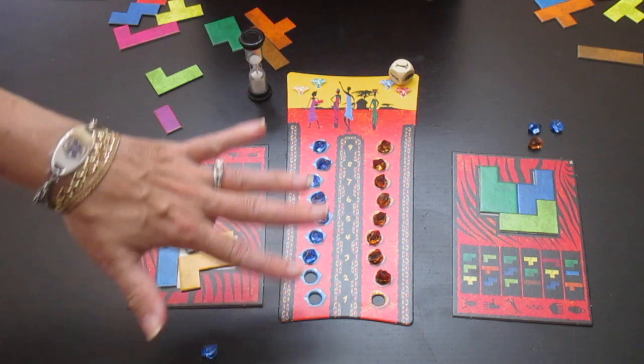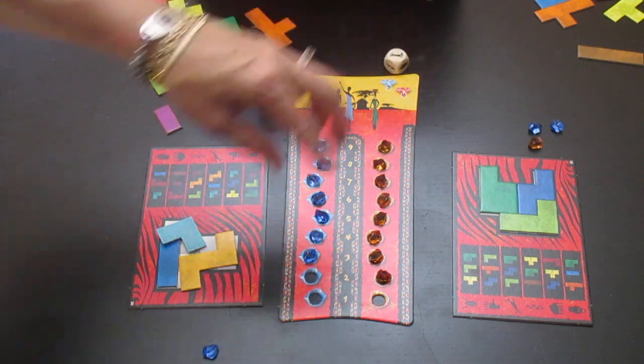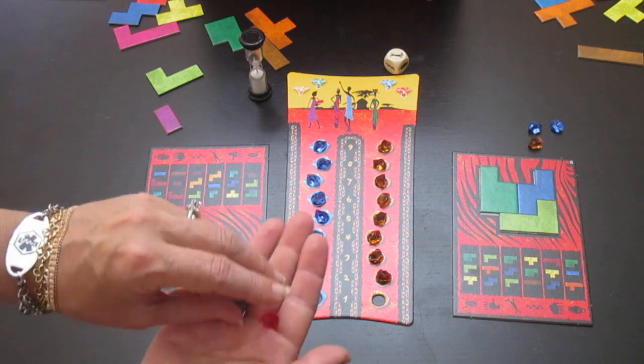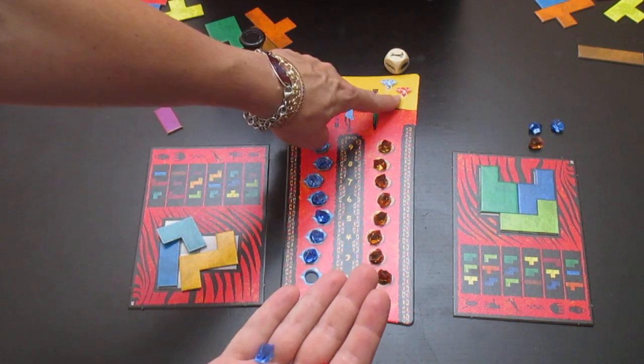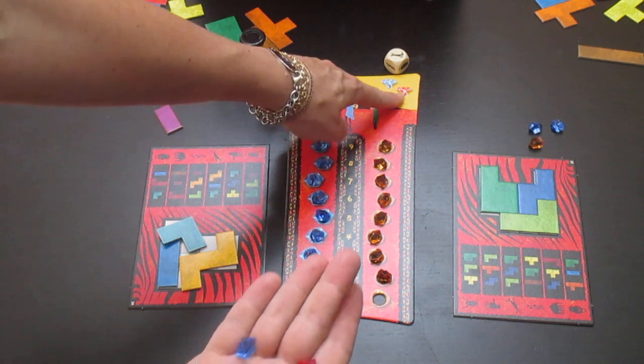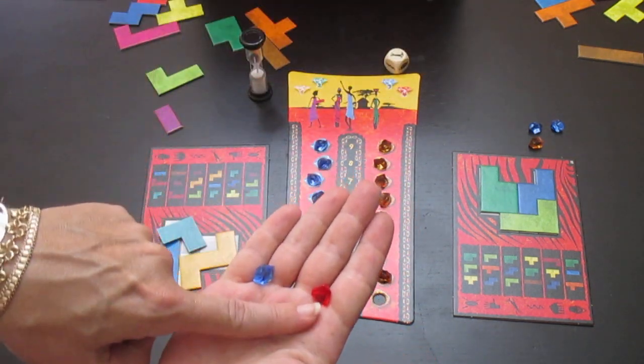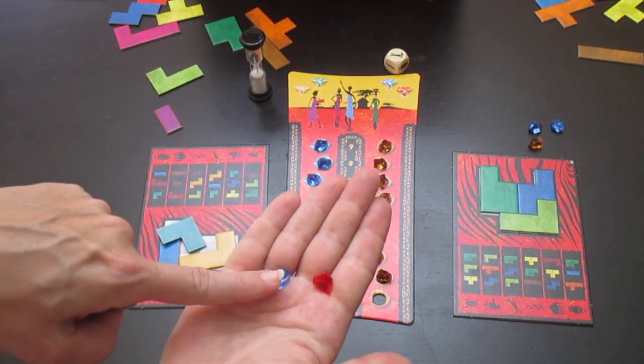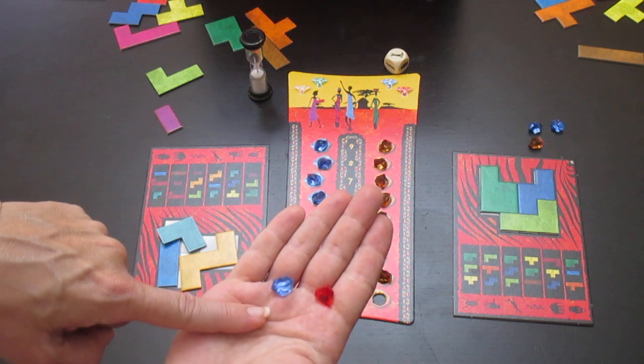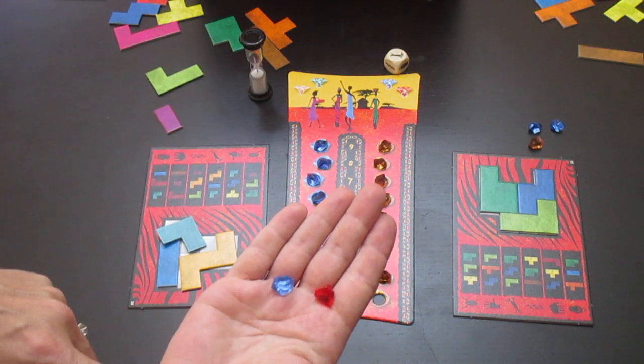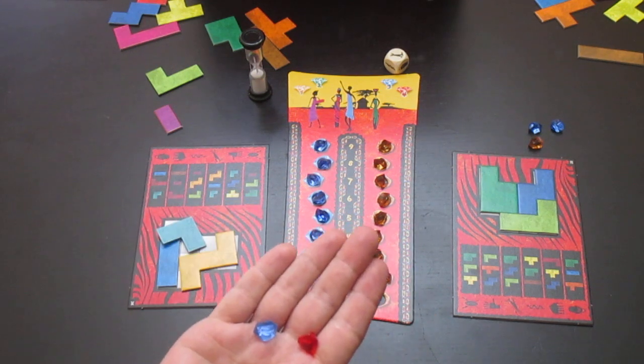At the end of all nine rounds, you count up your stones. And you'll see up here, the red stones are worth four points, the blue stones are worth three points, the green stones are worth two, and the amber stones are worth one.